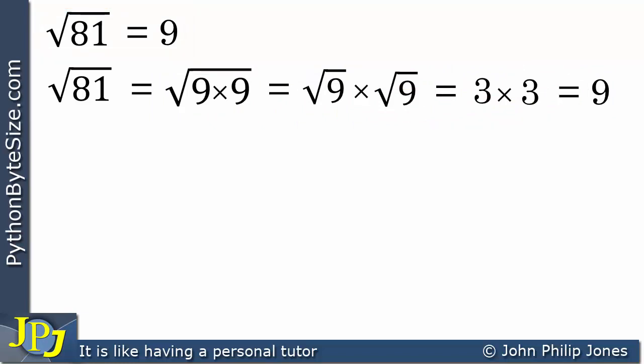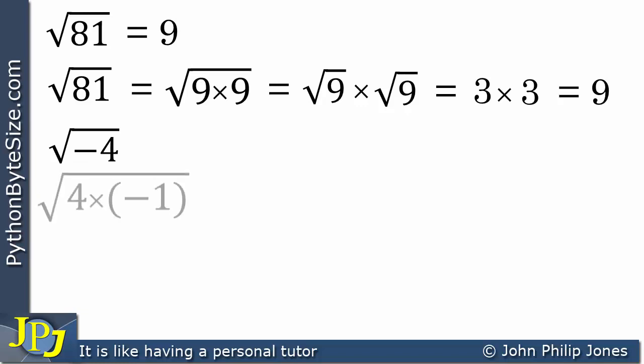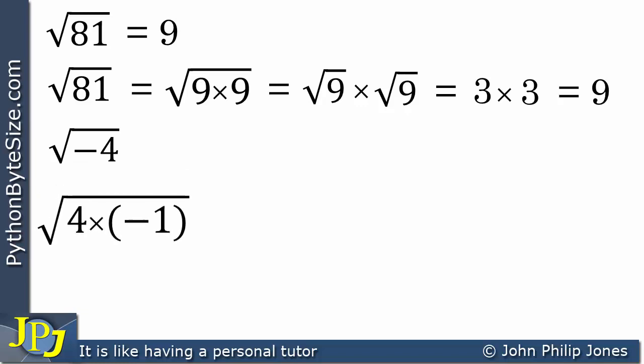Let's now consider the square root of minus 4. We know we cannot find the square root of a negative number and have the result be a real number. But what I'm going to do with the minus 4 here is split it — as you can see — to 4 times minus 1, and of course 4 times minus 1 is minus 4.